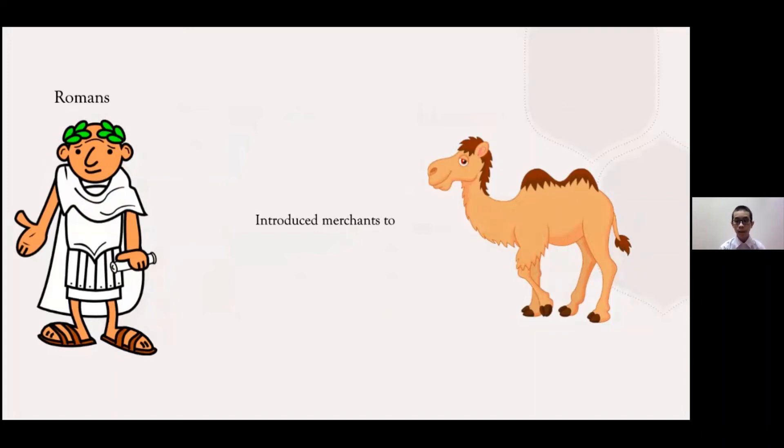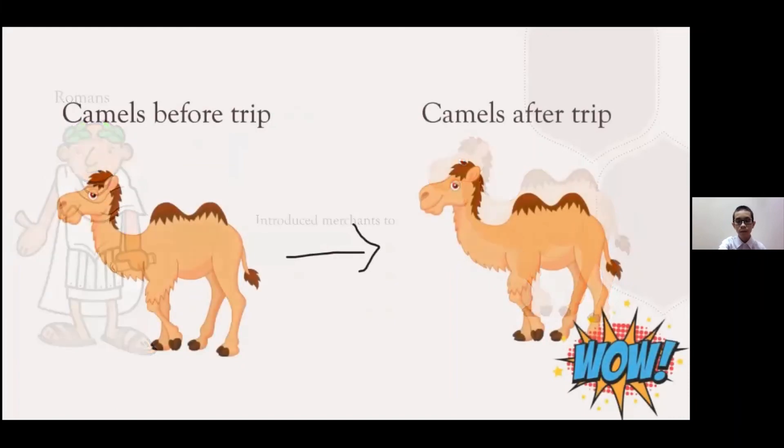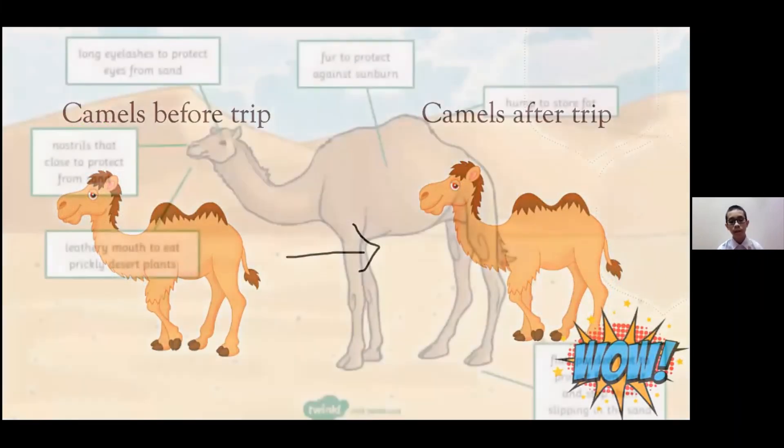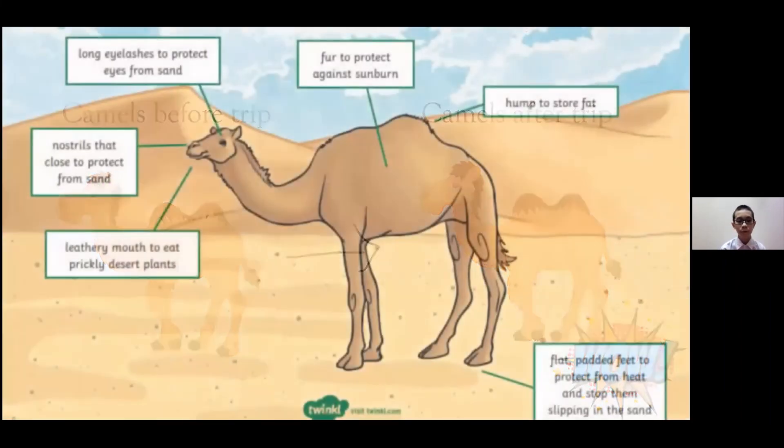After one trip, the camel can survive the hot desert. They were very happy. They have adaptations to the very harsh environment.